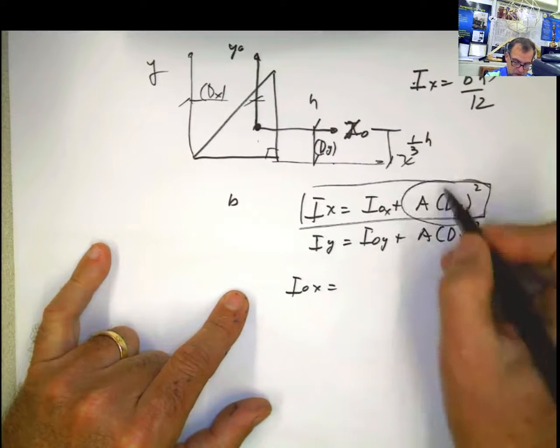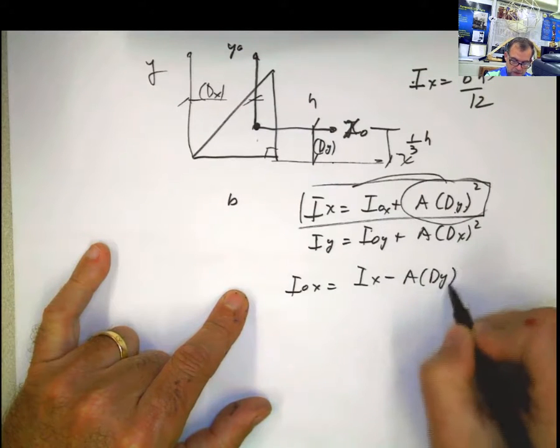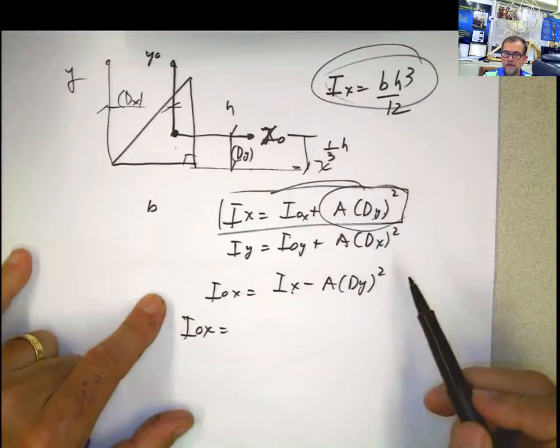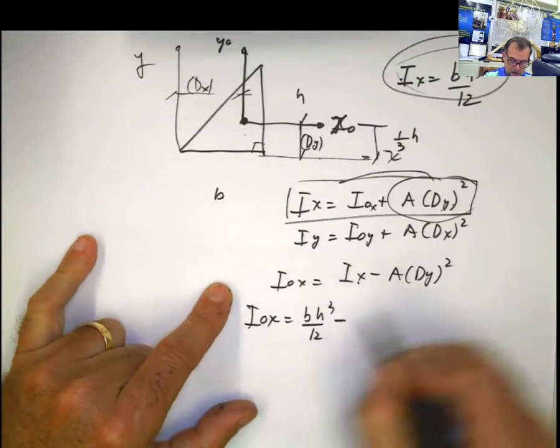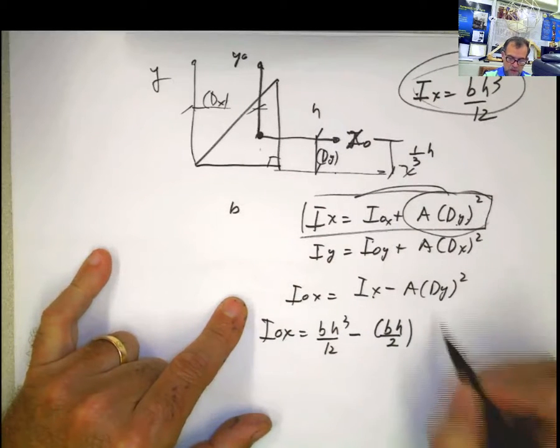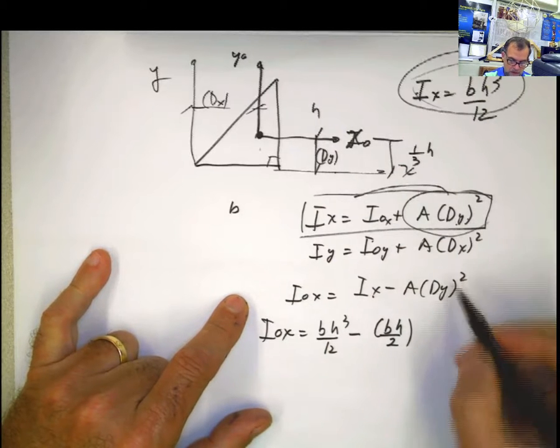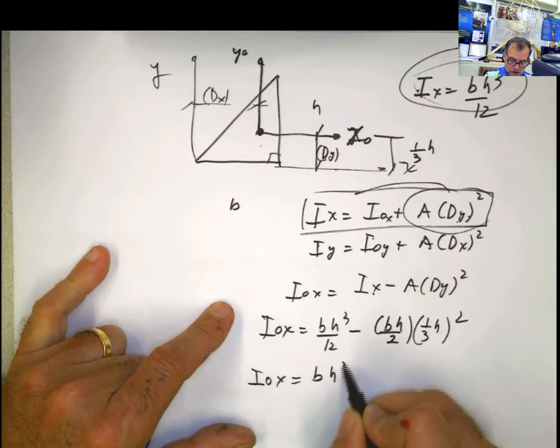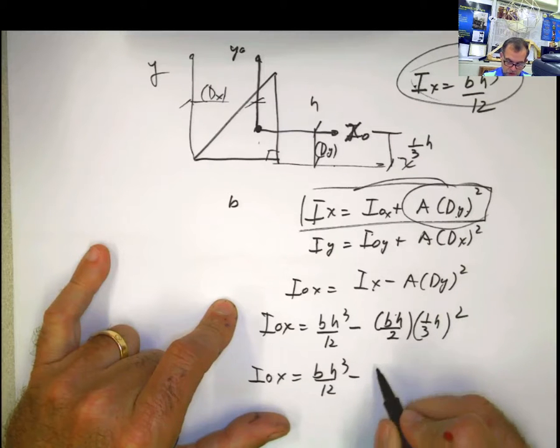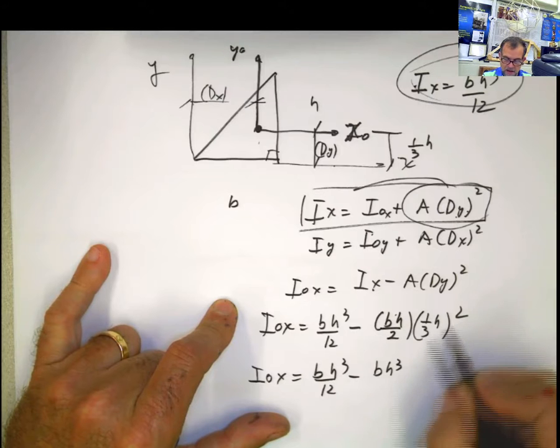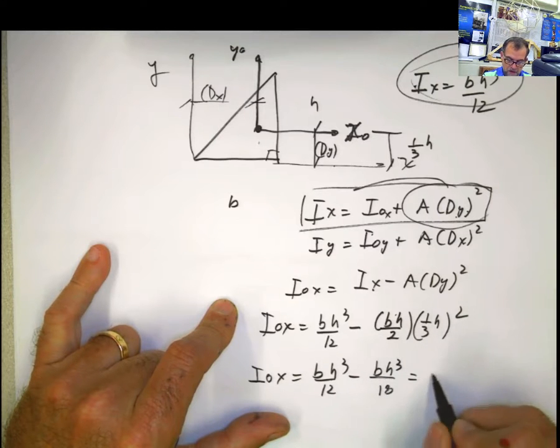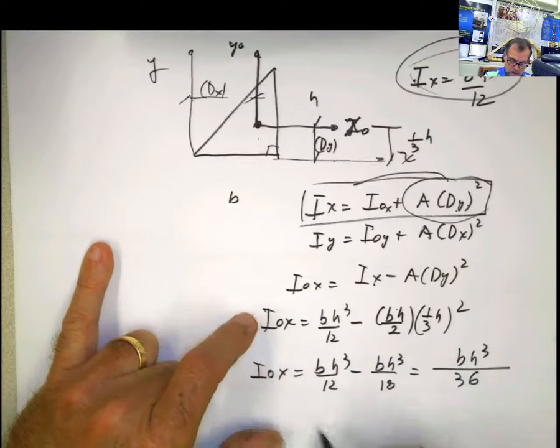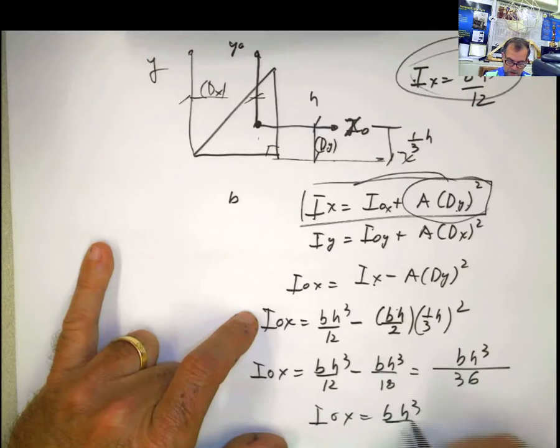I solve for i sub 0x: it's i sub x minus A times dy squared. i sub 0x equals bh cubed divided by 12 minus bh divided by 2 times 1 third of h squared. This is bh cubed divided by 12 minus bh cubed divided by 18. Common factor 36: 36 divided by 12 is 3, 36 divided by 18 is 2. 3 minus 2 is 1. i sub 0x equals bh cubed divided by 36.